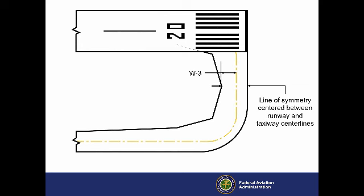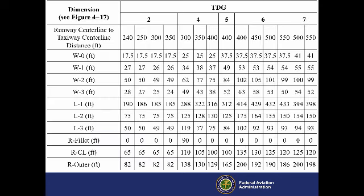Another table in the AC lists the widths, lengths, and radii for right angle entrance taxiways for all known combinations of TDG and typical runway centerline to parallel taxiway centerline distances. TDG3 does not appear in this table because two standard 90-degree turns work for all typical TDG3 runway to taxiway separations.